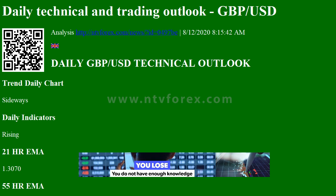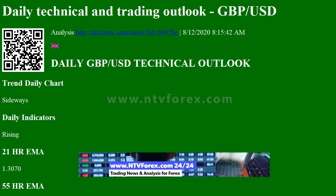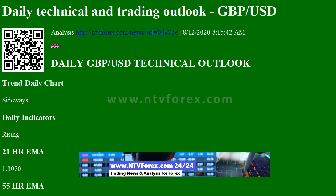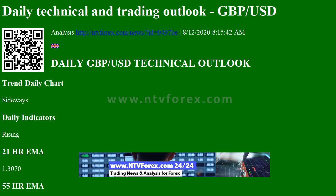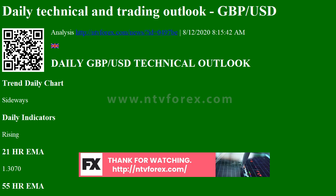Daily Technical and Trading Outlook: GBP/USD Analysis. Daily Chart: Sideways. Daily Indicators: Rising. 21-HR EMA 1.3070, 55-HR EMA 1.3077. Hourly Chart: Sideways. Hourly Indicators: Getting oversold. 13-HR RSI 37, 14-HR DMI. Daily Analysis: Consolidation with Downside Bias. Resistance: 1.3186 (last Thursday S-High), 1.3132 (Y-Day S-High), 1.3103 (Monday S-High). Support: 1.3010 (last Friday S-Low), 1.2982 (last Tuesday S-Low), 1.2945 (July 30 Low).